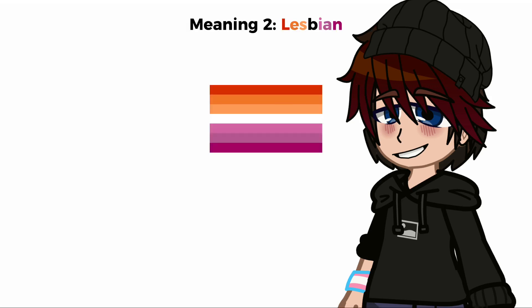Another type of homosexuality is lesbians. Lesbians are women who are attracted to other women. This can also include non-binary and other genders except for male. Some good examples of lesbian representation is Tara and Darcy from Heartstopper and Amity from The Owl House.